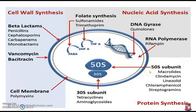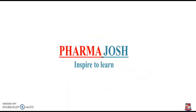Another variety of drugs inhibits the 50S subunit site. Examples include macrolides, clindamycin, linezolid, chloramphenicol, and streptogramins. This covers the basic mechanisms by which antibiotics inhibit the growth of bacteria. Thank you very much for watching.